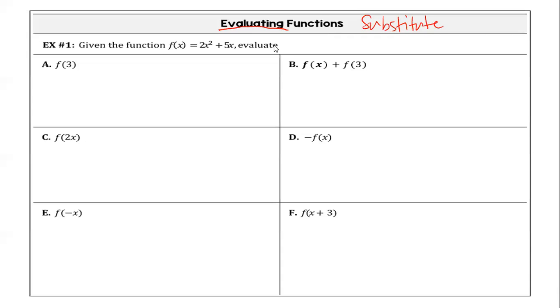All right. So on the first one, this is just a numerical substitution. So for our numerical substitution, we have two times three squared plus five times three. That led us to two times nine plus 15. That leads us to 18 plus 15 equals 33. How do we do with level one?